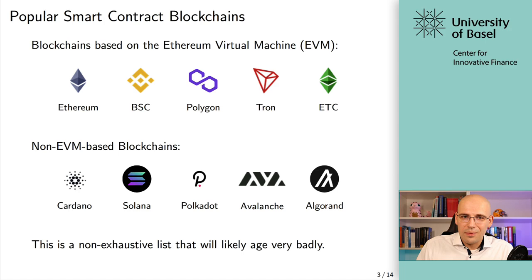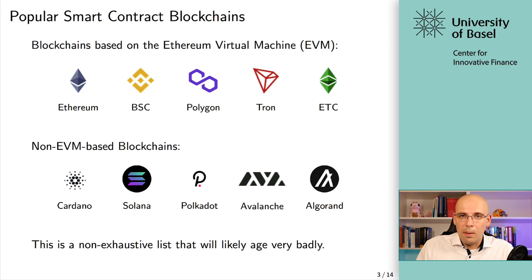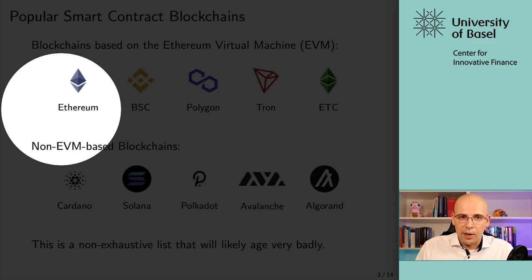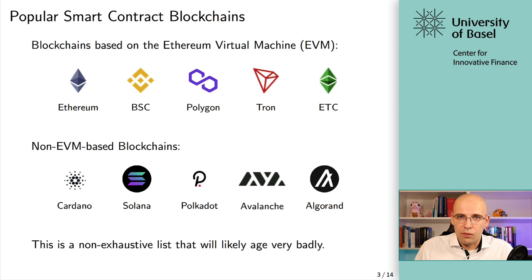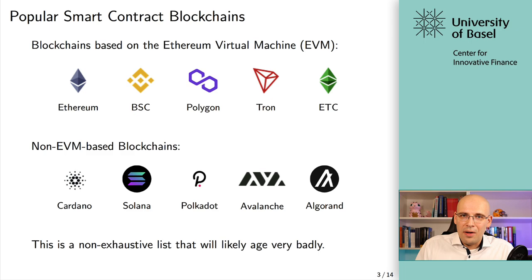There are many different smart contract based platforms where you can run smart contracts. I'll tell you right now, forget about any specific list — lists like these age really poorly. I just wanted to show you that Ethereum, the one we will look into in this class, is not the only one. There are many different smart contract platforms, many different blockchains that are smart contract capable, and there is no way to tell which ones are going to succeed. The reason why we're still using Ethereum is actually two-fold.